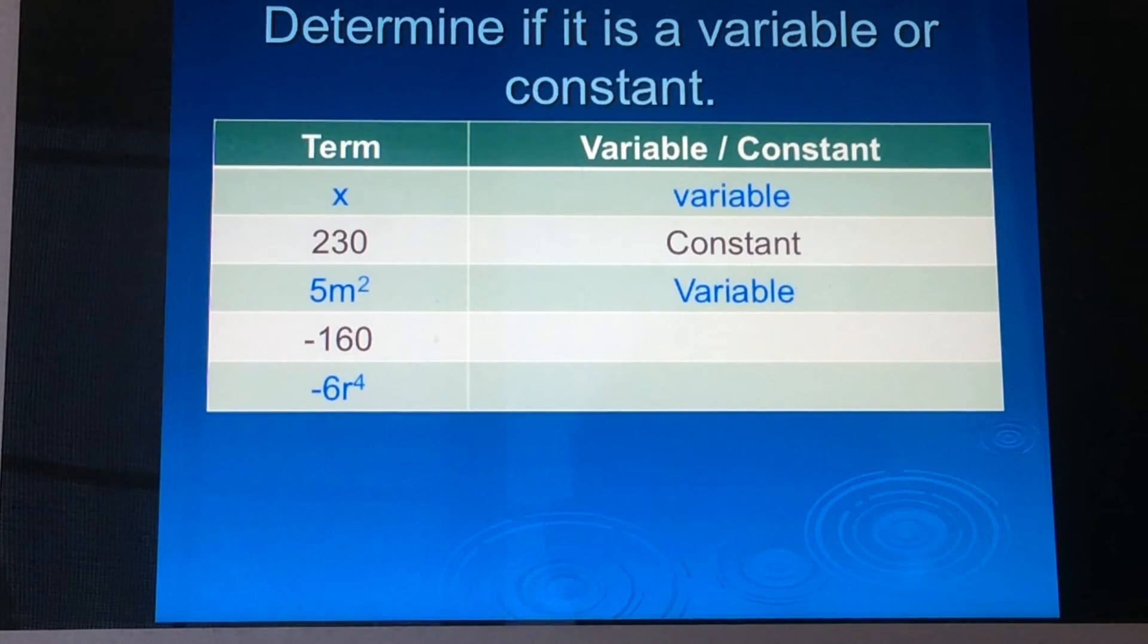Negative 160 would be the fourth one. And that is a constant, again, because there are no variables. It's just a number. And then the last one, negative 6r to the fourth. If you said that it is a variable, you would be absolutely correct. Again, going back to the same reasoning for number three. All right. I hope you got five out of five on that. Let's move on.